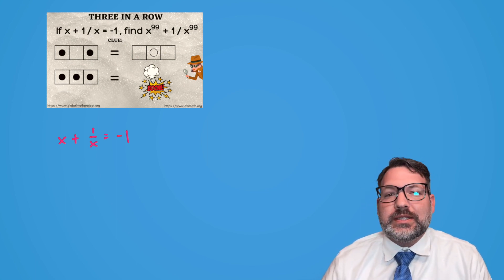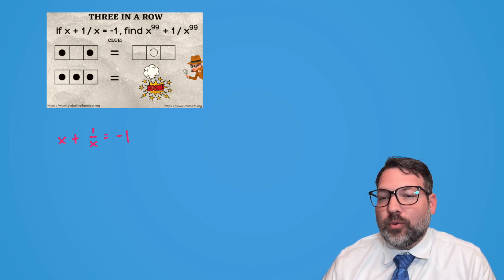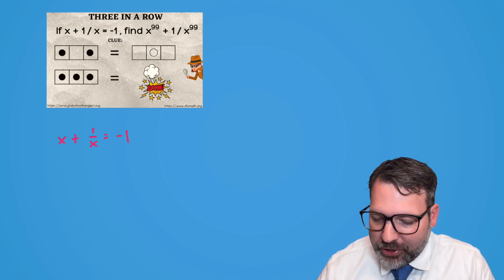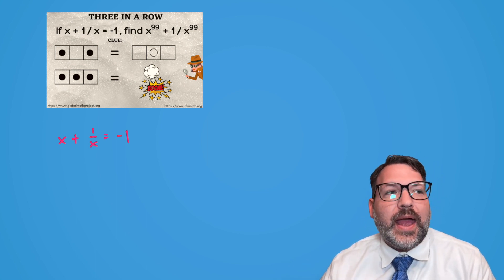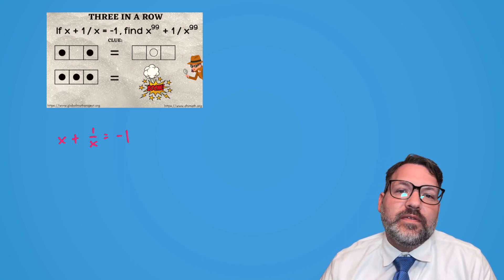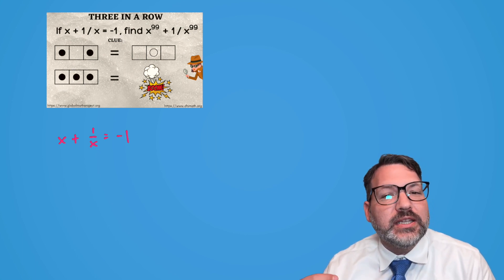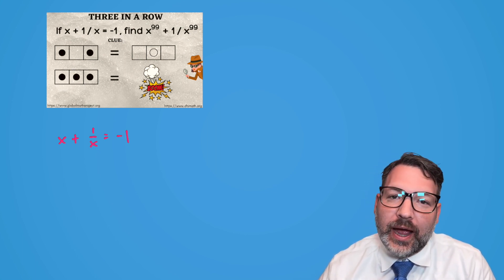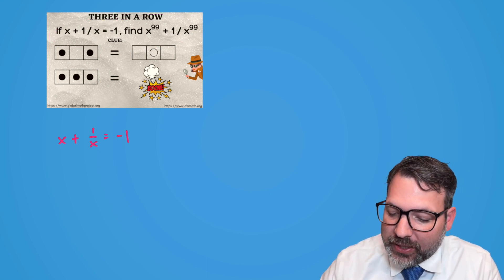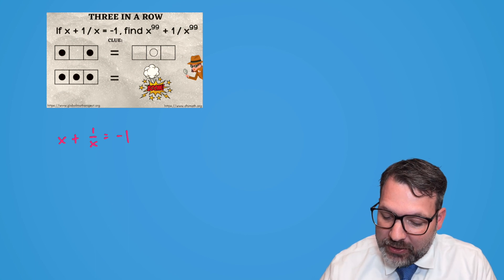Honestly, I don't know if this is going to work — either it will and you're watching this video, or it won't and it's never going to see the light of day. The problem comes from globalmathproject.org. If a number added to its reciprocal equals negative one, what is the value of that number raised to the 99th power plus its reciprocal raised to the 99th power? In symbols: if x + 1/x = -1, find x^99 + 1/x^99.